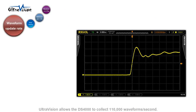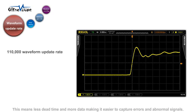The UltraVision chipset allows the DS4000 to collect up to 110,000 waveforms per second. This means less dead time and more data making it easier to capture errors and abnormal signals.